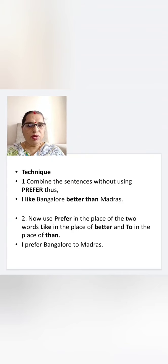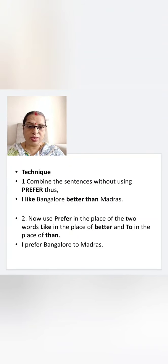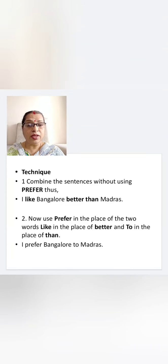The above example is a compound sentence. When you want to make it simple, you write: 'I prefer Bangalore to Madras.' The technique is combining the sentences without using 'prefer': 'I like Bangalore better than Madras.' Now use 'prefer' in place of two words — 'like' in place of 'better', and 'to' in place of 'than'. Result: 'I prefer Bangalore to Madras.'